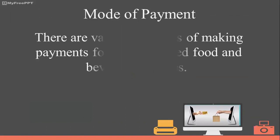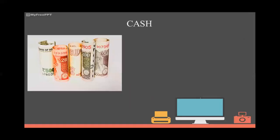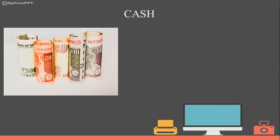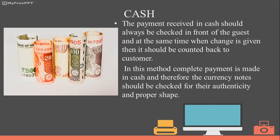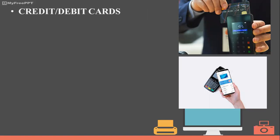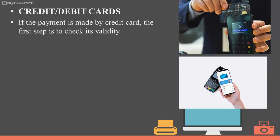There are various methods of making payments for consumed food and beverage services. The first is cash. Payment received in cash should always be checked in front of the guest, and when change is given, it should be counted back to the customer. Currency notes should be verified. The second mode is credit or debit card. If payment is made by credit card, the first step is to check its validity, then a printed slip is signed by the guest.